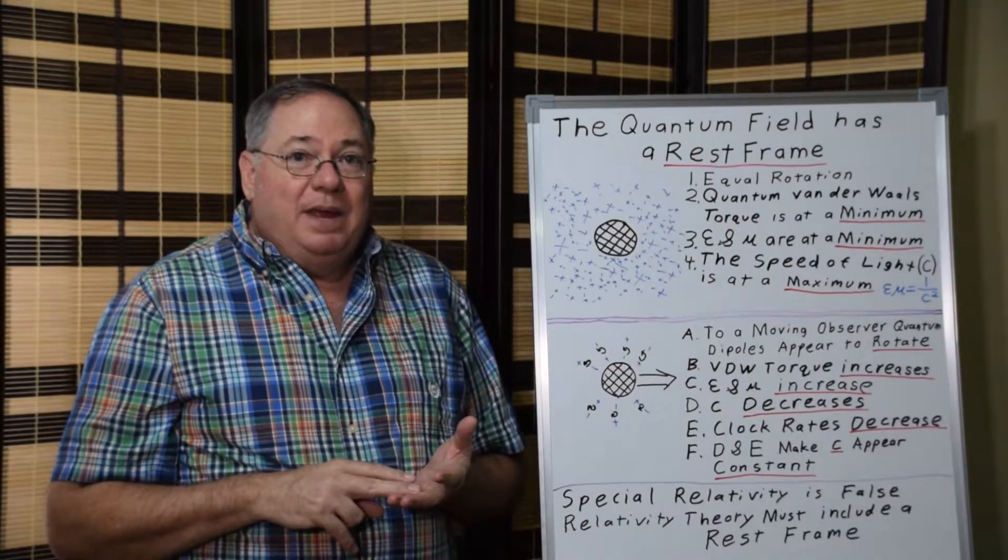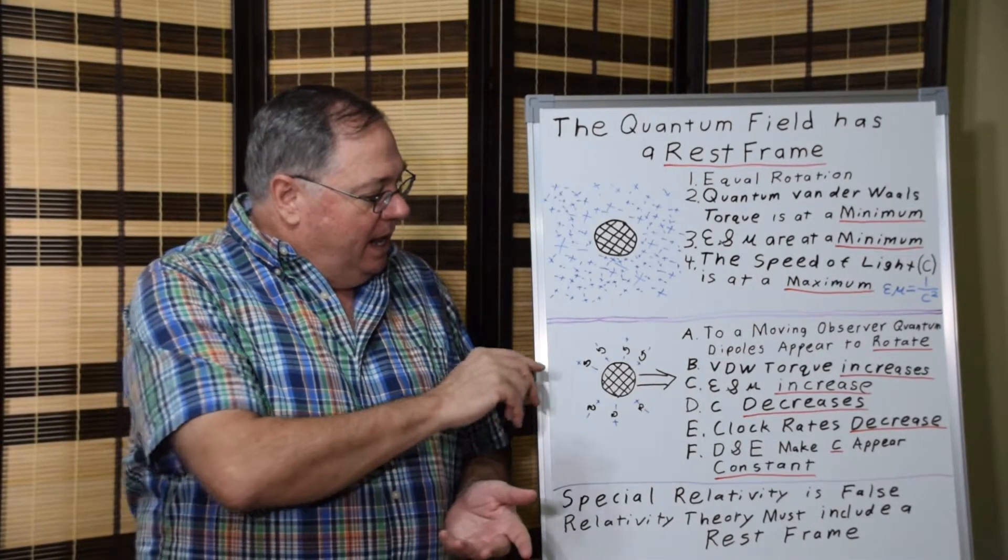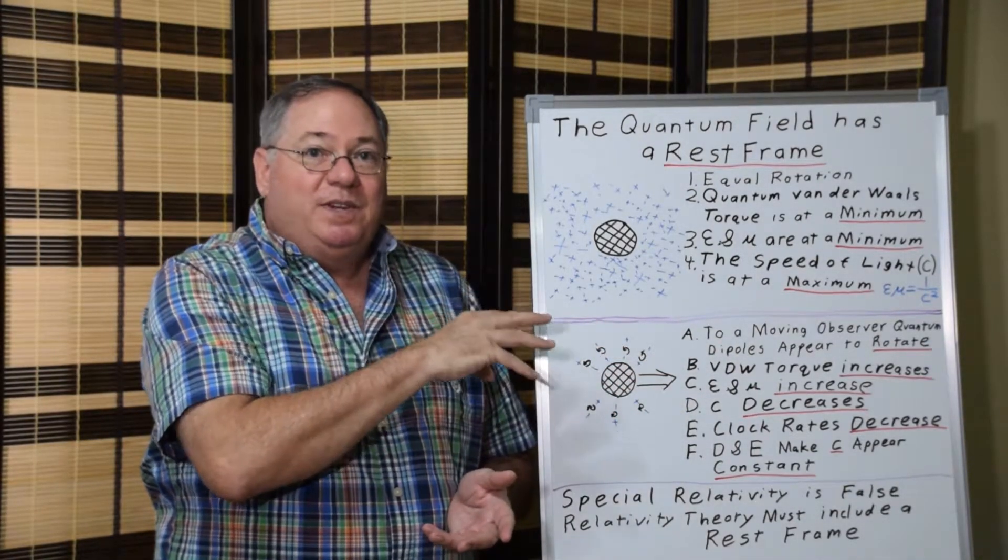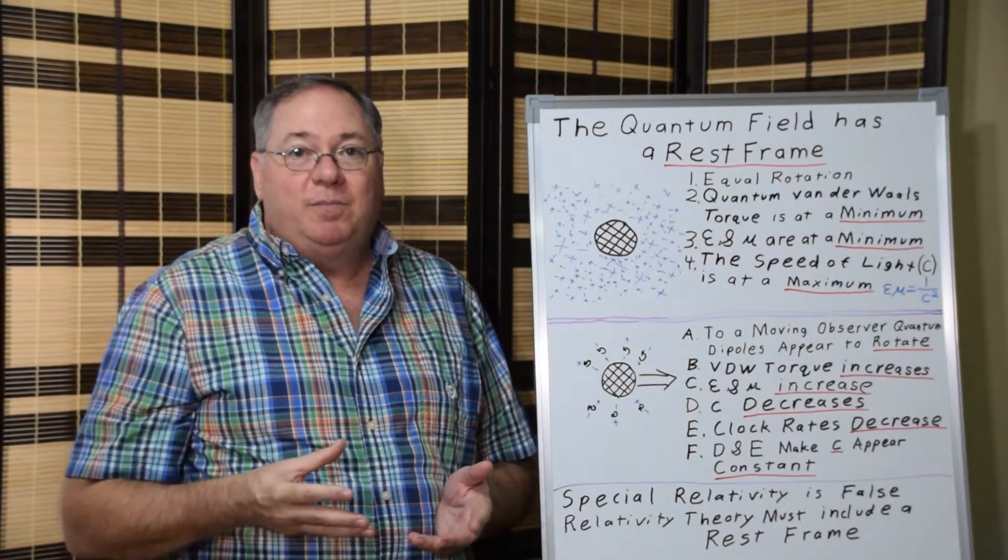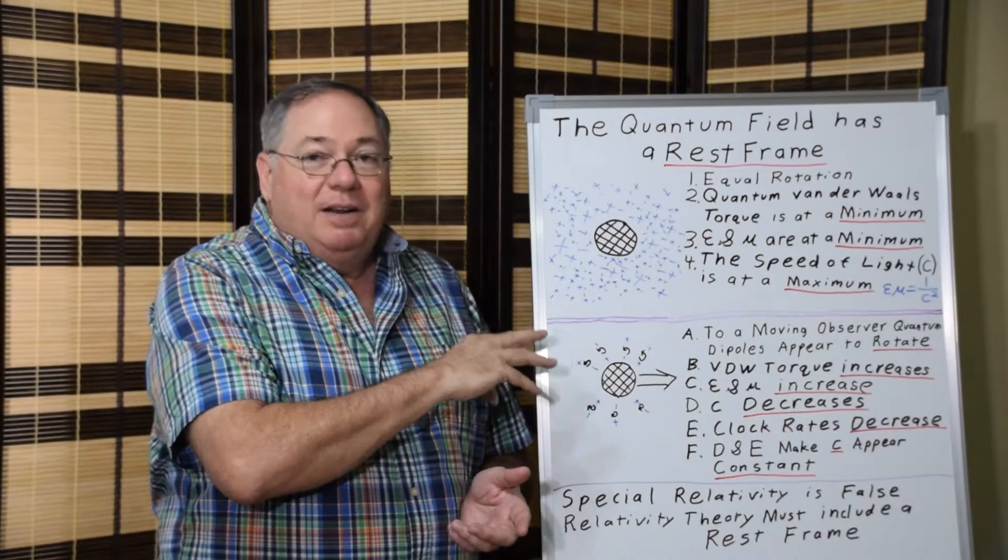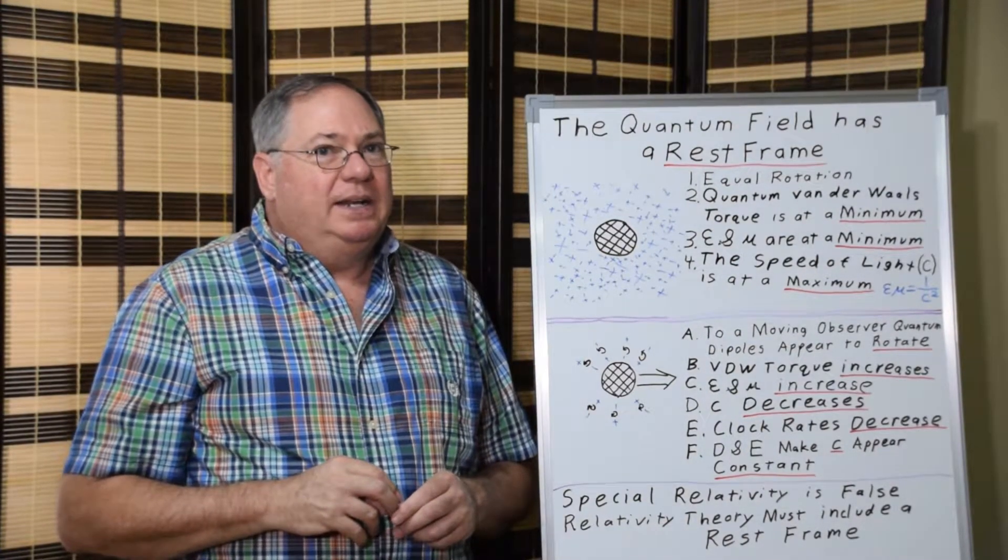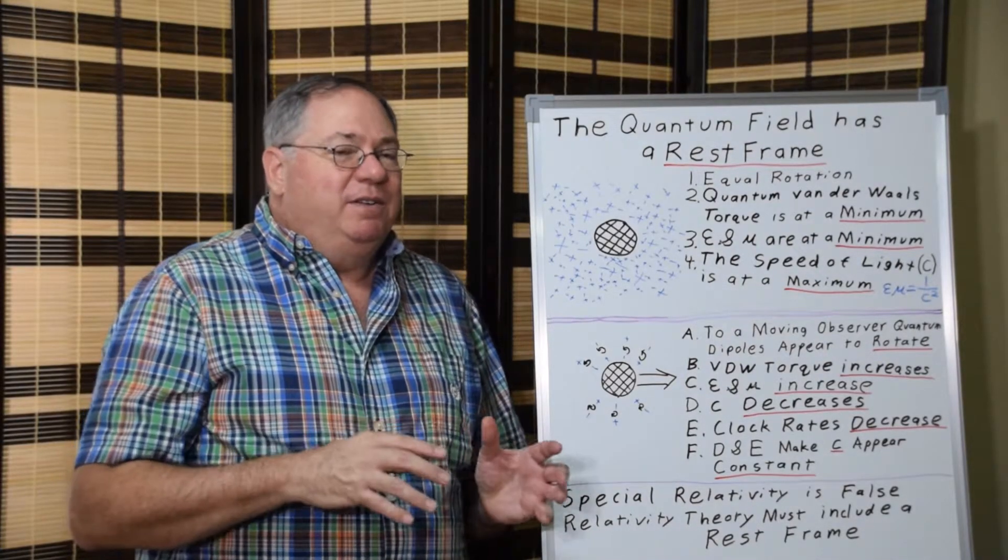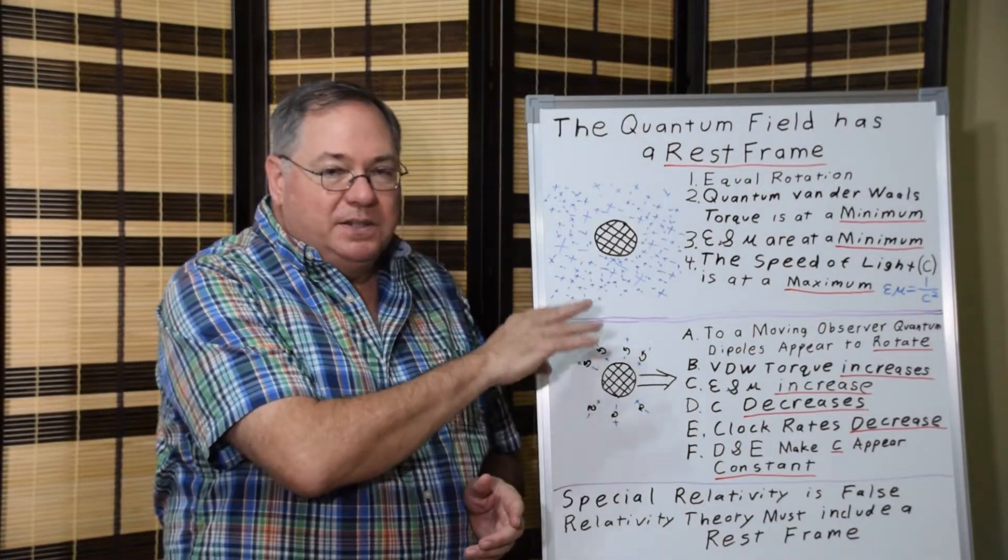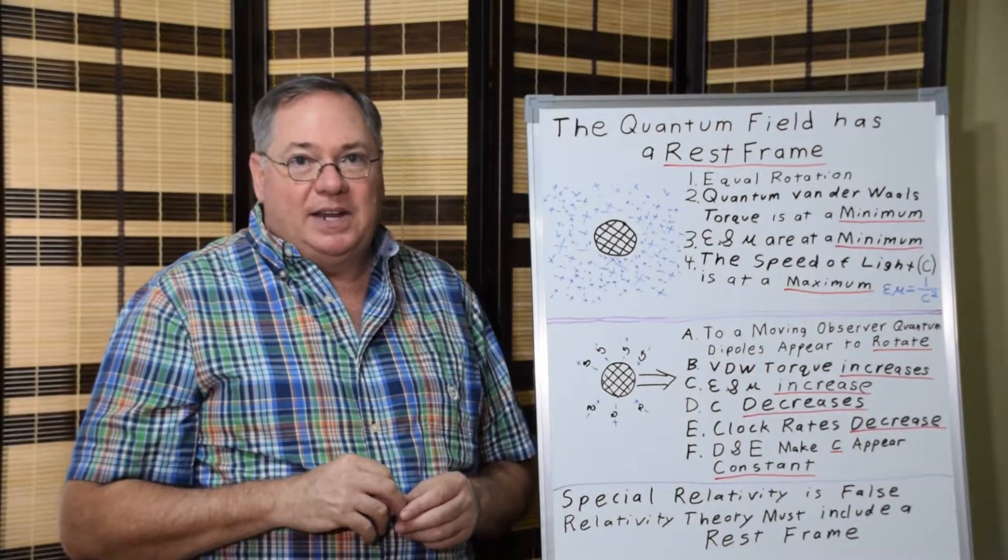But at the same time, it also reduces clock rates. So a moving body that has clocks on it, those physical clocks are going to run slower at the same rate that the speed of light is slower, which makes the speed of light look like it's constant. We shouldn't really be thinking of it as being constant. It's only constant because the clocks and the speed of light are changing at the same rate.